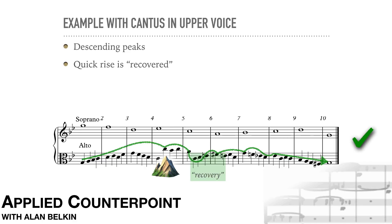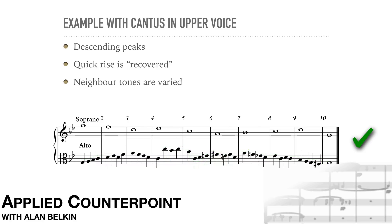Another thing to notice in this example is the variety in the neighbor note figures in measures two, four, six, and eight. Some are upper neighbors, some are lower neighbors, and they don't always arrive on the same beat of the bar. This is important to keep the line from becoming mechanical. Also, if the neighbor note starts to sound like an intermittent, literally repeated motive, this can be distracting. We'll discuss motives in detail later in the course, but for now they're better avoided.